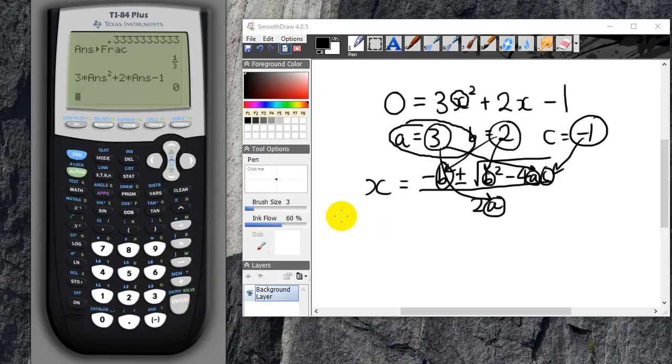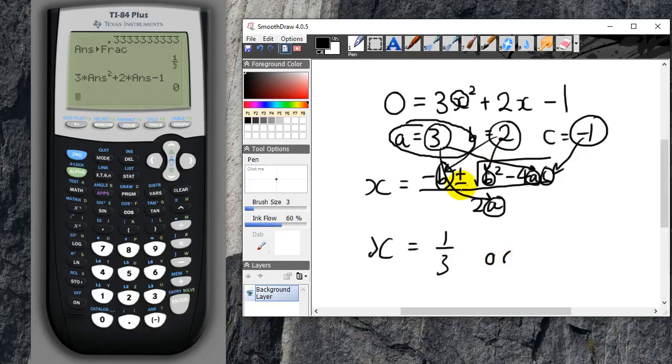So x equals 1 over 3 is one of the solutions. Now if you guys remember when I entered the formula, I put in a plus over here and I neglected the minus. So now we're going to go back into the formula and change the plus to a minus.